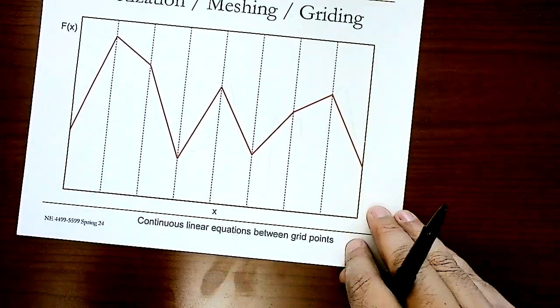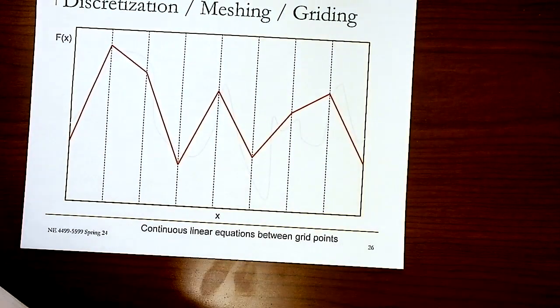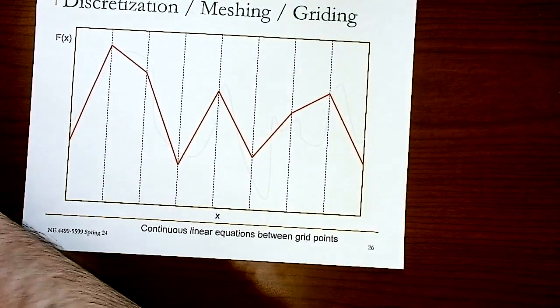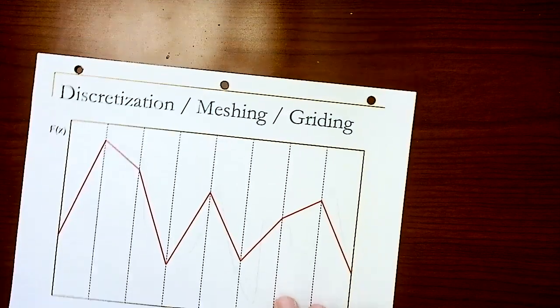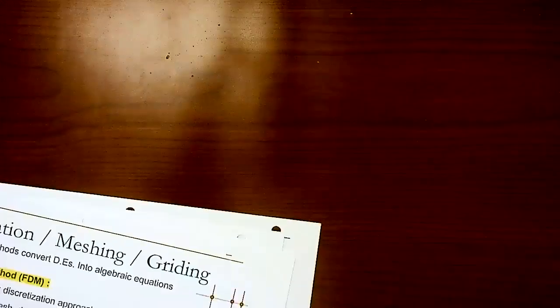So here's the difference: finite difference captures data at the nodes — the boundaries of the subdomains. Finite element gives piecewise functions, either continuous or discontinuous. Finite volume gives the average value over each subdomain. Moving forward, we'll look at the finite difference method with simple examples before jumping into the main topic: the finite volume method.